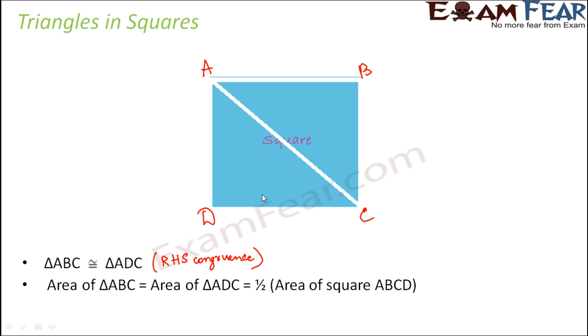Now since both these triangles are congruent, therefore we say that area of triangle ABC is equal to area of triangle ADC, which in turn is equal to half of area of square ABCD.